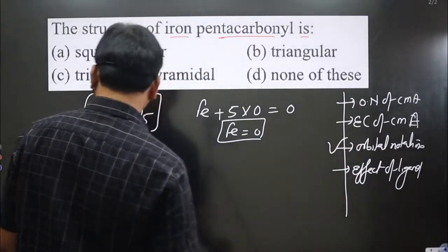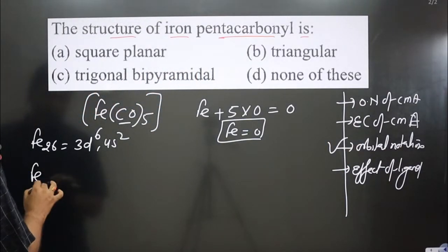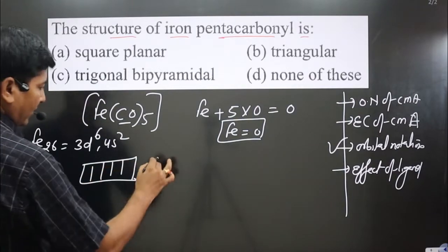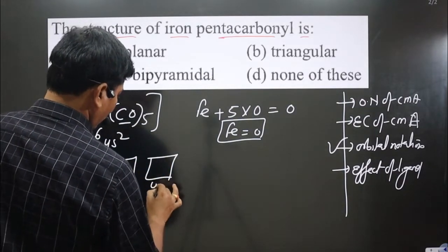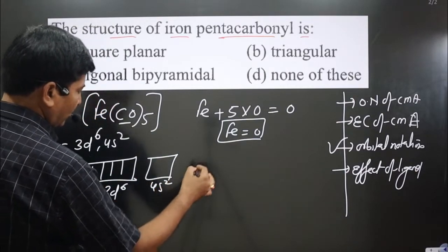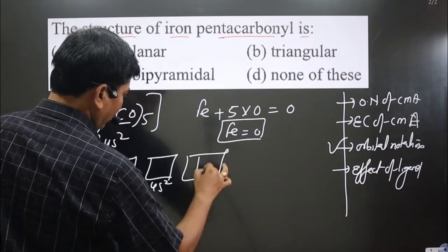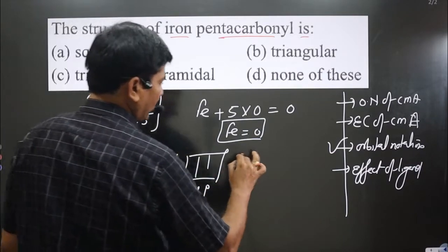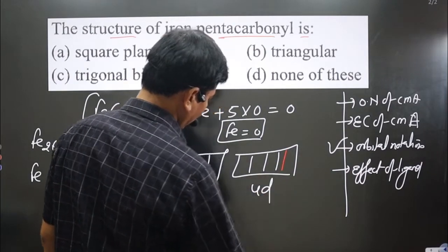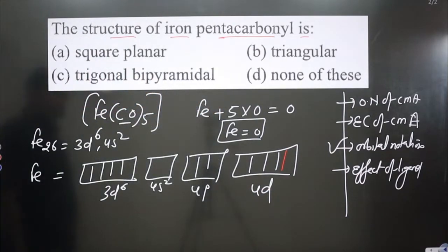Next we have orbital notation. For Fe, first we have the d orbitals, which have 6 electrons. Then we have the 4s orbital with 2 electrons, and then we have 4p and 4d orbitals, which are all vacant orbitals.